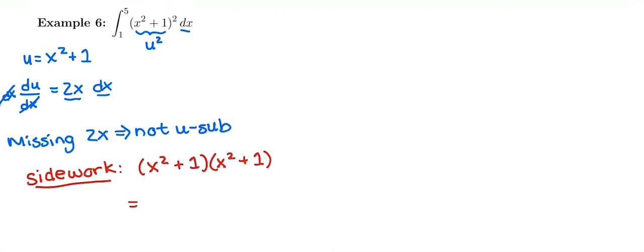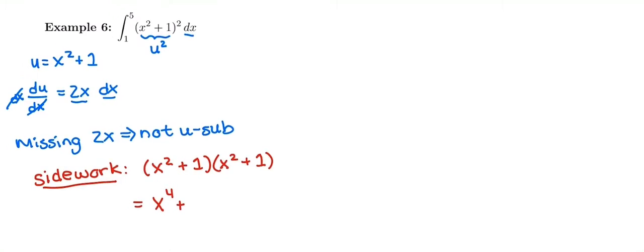So first I have x squared times x squared, which is going to be x to the 2 plus 2, which is 4. My outer, I have x squared times 1, which is going to give me a 1x squared. My inner is 1 times x squared or 1x squared, and then my last 1 times 1 is 1. So I get x to the 4th plus I have 2x squared plus 1, and now I can rewrite this integral.